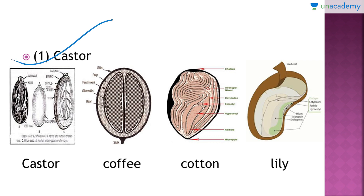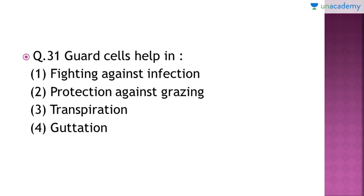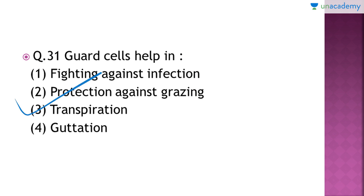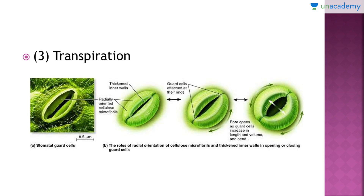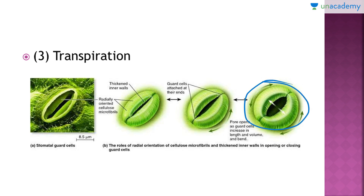Moving on to the next question: guard cells help in which of the following? The correct answer is option number three — guard cells help in transpiration. Here you can see the diagram of a guard cell. This is the guard cell, and this whole portion is actually the stomata through which the movement or exchange of various gases along with water molecules takes place. This is the part from which water is evaporated out, resulting in transpiration.